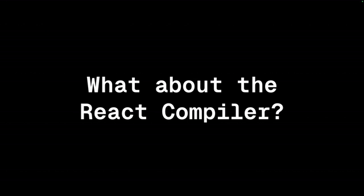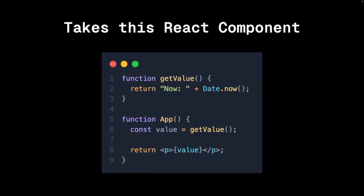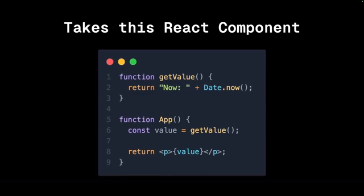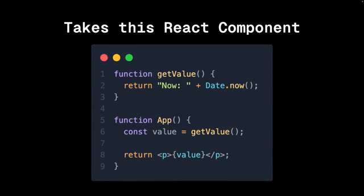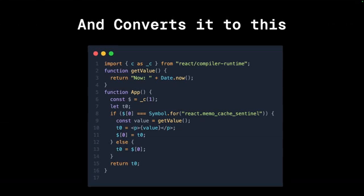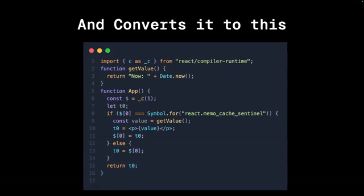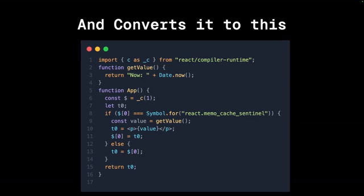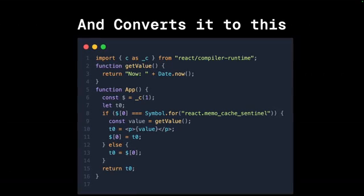What about the React compiler exactly? If you take this very simple component — an app that takes a value and just renders it in a paragraph — and put it through the new React compiler, you get something a little more complicated. It adds some nuances, and most particularly, look at the caching and memoization happening. That's basically the optimization part of the new React compiler.